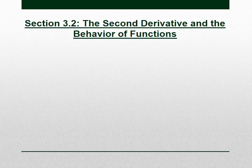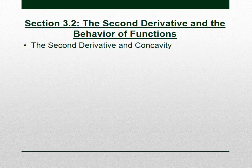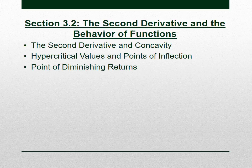Hey guys, this is 3.2, the second derivative and the behavior of functions. So in 3.1 we talked about the first derivative and the behavior of functions. Here we'll be looking at the second derivative and what it tells us about how a function is behaving. We're going to talk about concavity, hypercritical values, points of inflection, a point of diminishing returns, and the second derivative test.